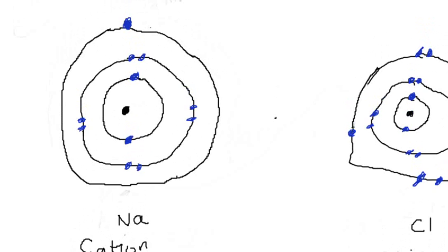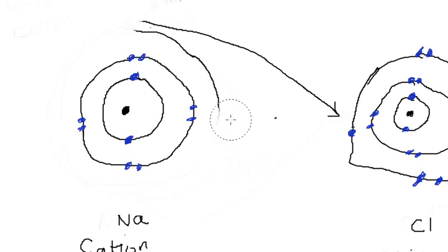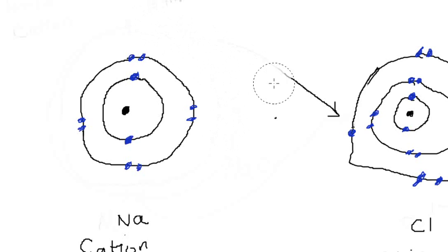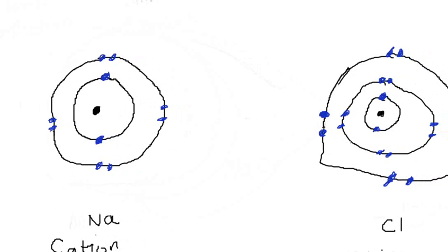Look what's going to happen here: this electron of sodium is actually going to be lost and given to chlorine, so chlorine is going to accept that electron. Sodium loses its electron, and chlorine gains that electron from sodium. Now they're both happy because they both have their outer shells completed.